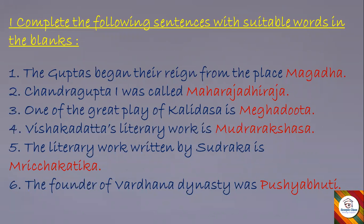The first section is: complete the following sentences with suitable words. The Guptas began their reign from the place — answer: Magadha. Chandragupta I was called — answer: Maharajadhiraja. One of the great plays of Kalidasa is — answer: Malavikagnimitram. Vishakhadatta's literary work is — answer: Mudra Rakshasa. The literary work written by Sudraka is — answer: Mricha Katika. The founder of the Vardhana dynasty was — answer: Prabhakaravardhana.